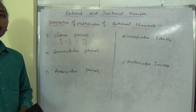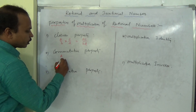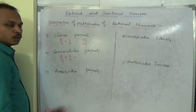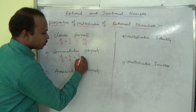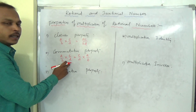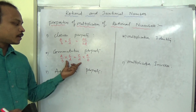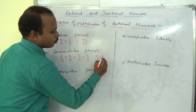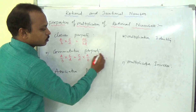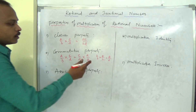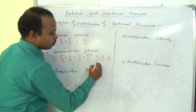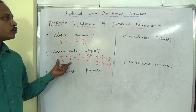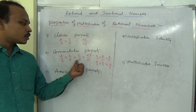Commutative property: if we take two rational numbers a/b and c/d, and multiply them in either order — a/b × c/d and c/d × a/b — both give the same result. For example, 2/3 × 4/2 = 8/6, and similarly 4/2 × 2/3 = 8/6. The product of two rational numbers does not change when you swap the order, so commutative property exists.